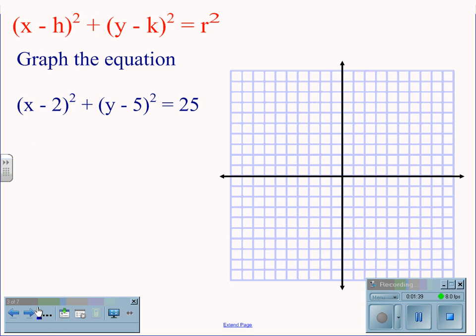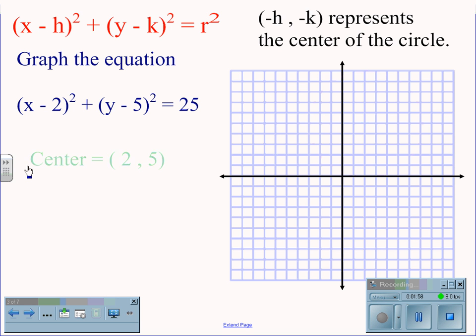For the equation x minus h quantity squared plus y minus k quantity squared equals r squared, we know that this value will have a center at negative h, negative k. So to graph the equation x minus 2 quantity squared plus y minus 5 quantity squared equals 25, we begin first by solving for the center of the circle.